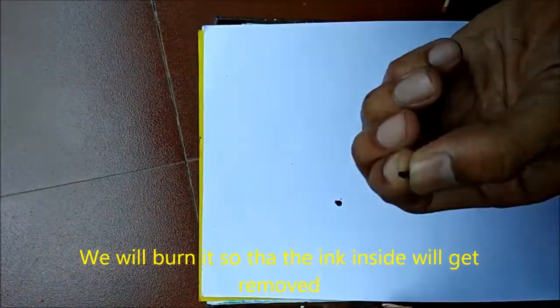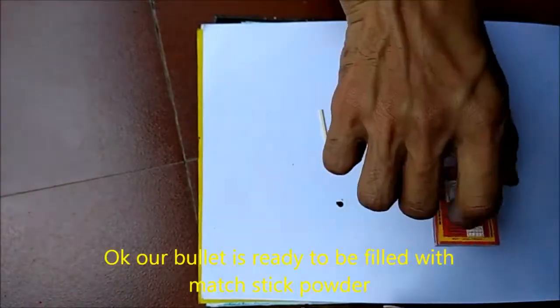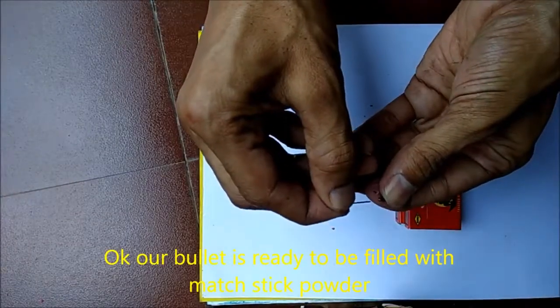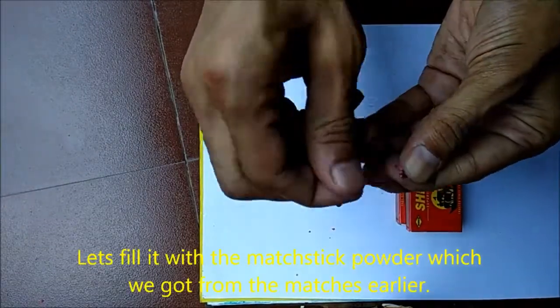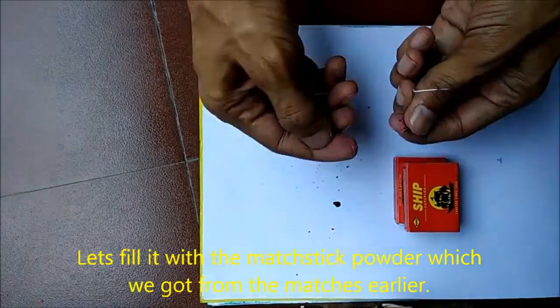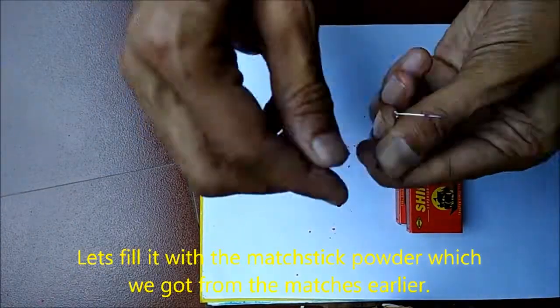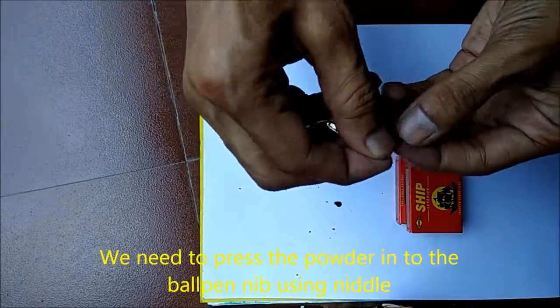Okay, our bullet is ready to be filled with matchstick powder. Let's fill it with the matchstick powder which we got from the matches earlier. We need to press the powder into the ball pen using the nib.